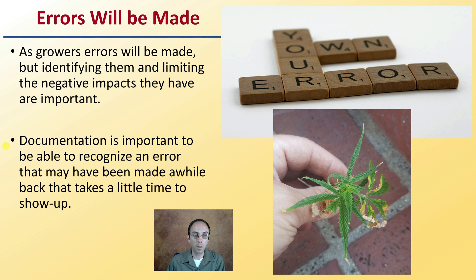Documentation is important to be able to recognize an error that may have been made a while back. It takes a little time to show up in certain plants — some are not immediate, some take time — and it's important to have that documentation.